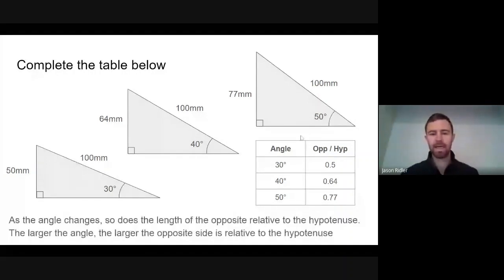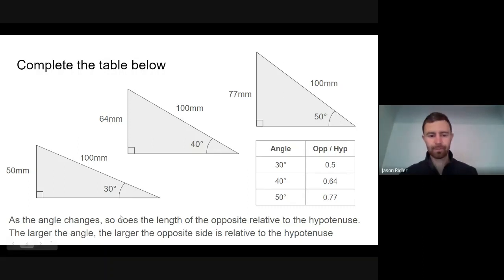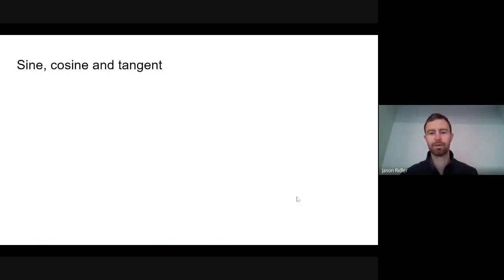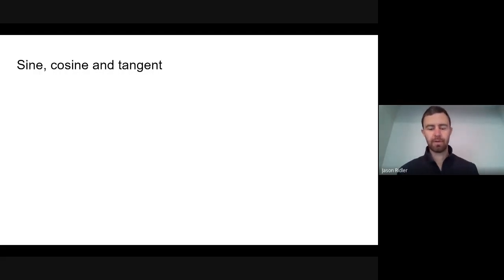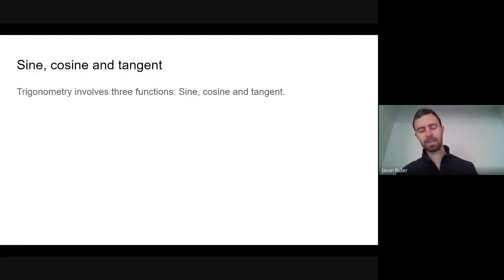As the angle changes, so does the length of the opposite side relative to the hypotenuse. For a 30-degree triangle it's half the hypotenuse; for a 40-degree triangle it's 0.64 of the hypotenuse; for a 50-degree triangle it's 0.77. The larger the angle, the larger the opposite side is relative to the hypotenuse. Now, sine, cosine, and tangent — you may have heard of these. There are buttons on your calculator for each, and these are the three basic trigonometric functions we're going to learn about.